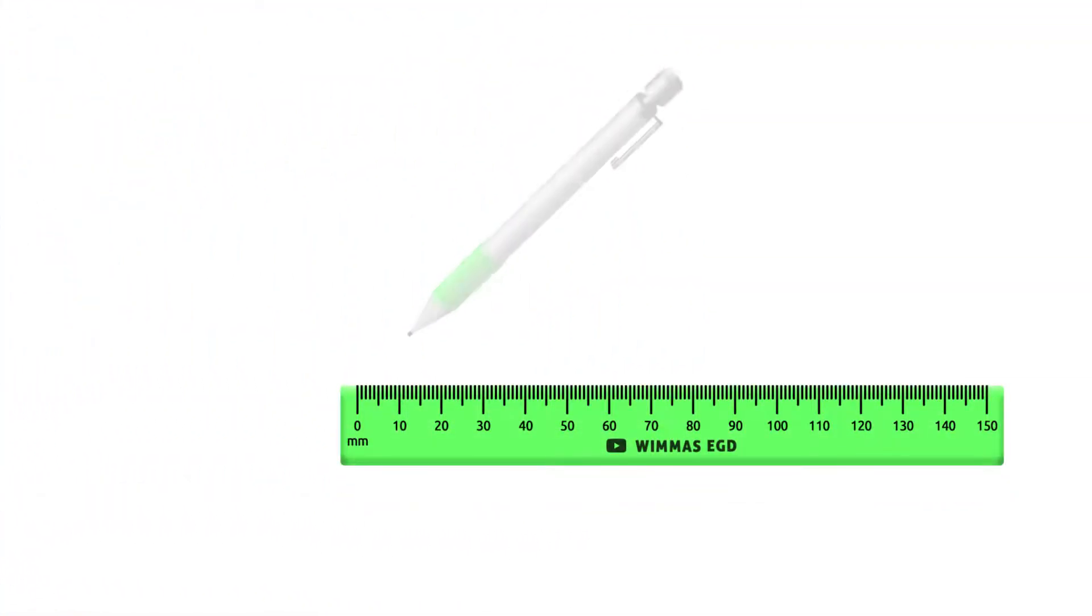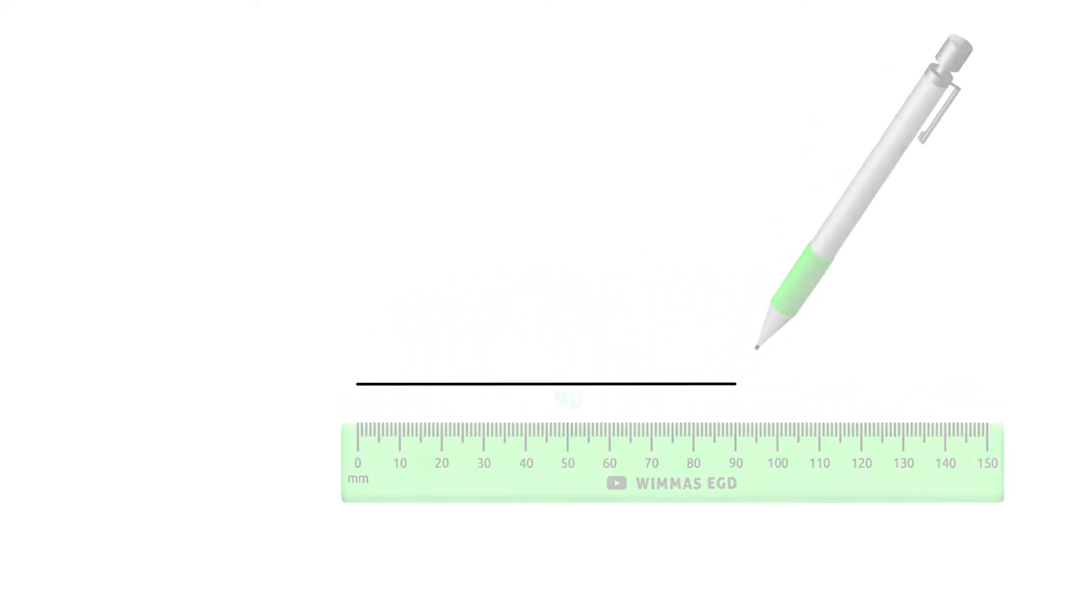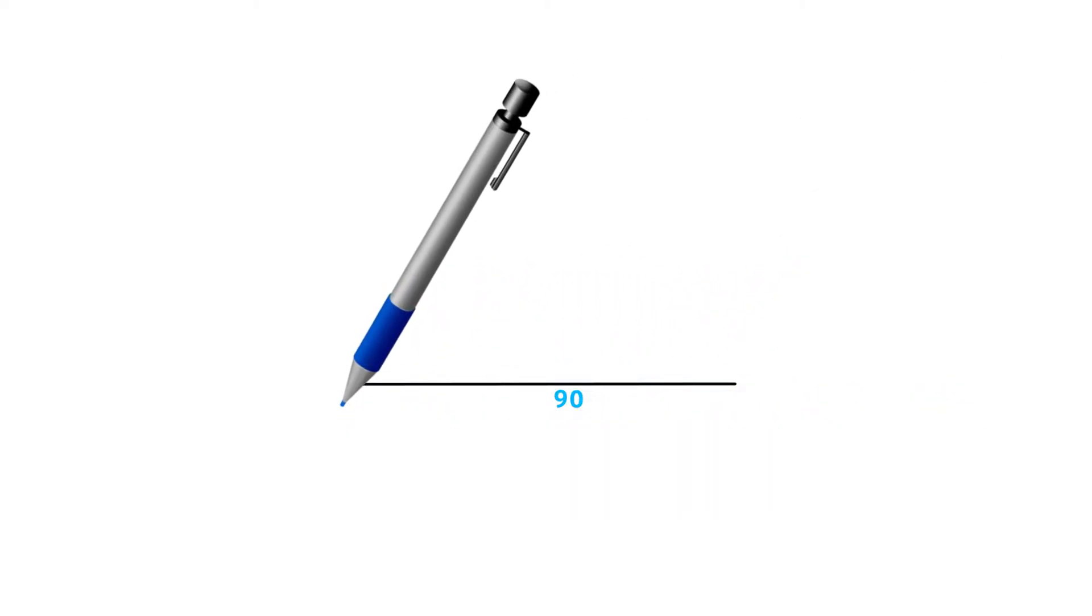In this video, we will draw a circumscribed circle of an equilateral triangle. Let's start by constructing our equilateral triangle using a side length of 90 mm. We can label our first side as side AB.